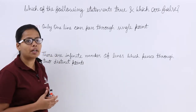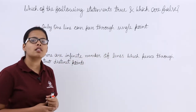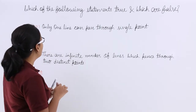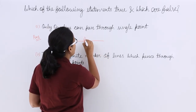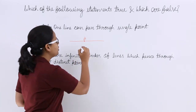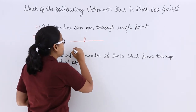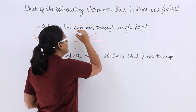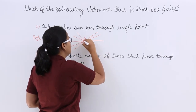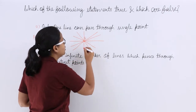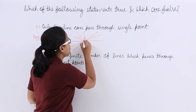Let's read our first statement: only one line can pass through a single point. Is this statement true or not? Here is a line passing through point A. You can actually pass many lines through a single point, so through a single point many lines can pass.